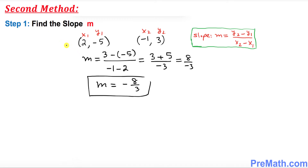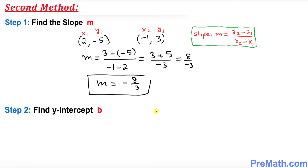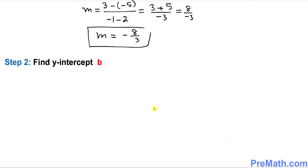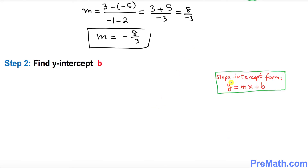Now let me show you the second method. The very first step is exactly the same — finding the slope, which is negative 8 over 3. In the second step we are going to find the value of b, the y-intercept, using the slope-intercept form y equals mx plus b. We pick one point again — negative 1 and 3. Call -1 as x and 3 as y.